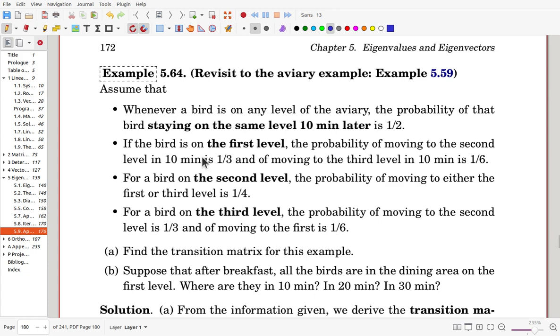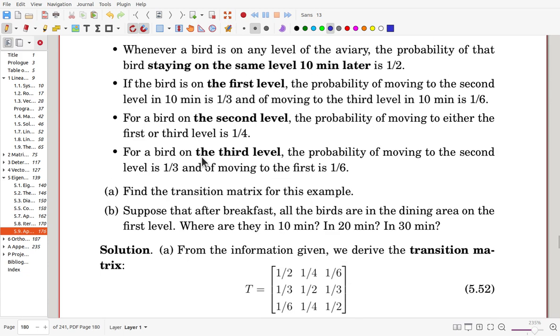So, for this data, we should be able to make the transition matrix. In the beginning, for every level, the birds are staying in 10 minutes with half probability. That is this one. In fact, all these diagonals are coming from this statement.